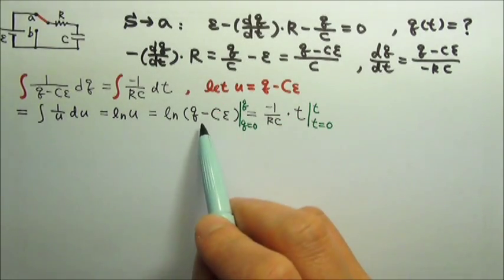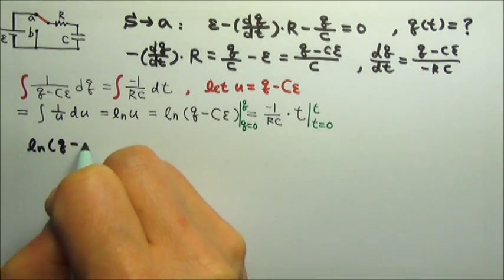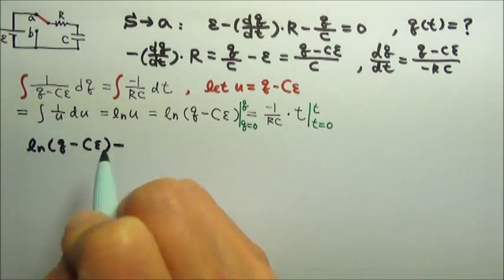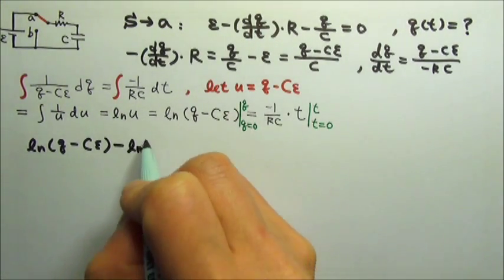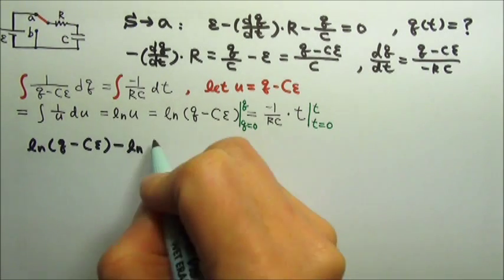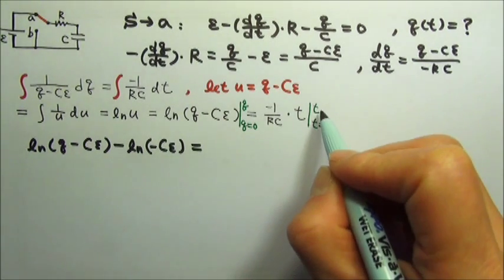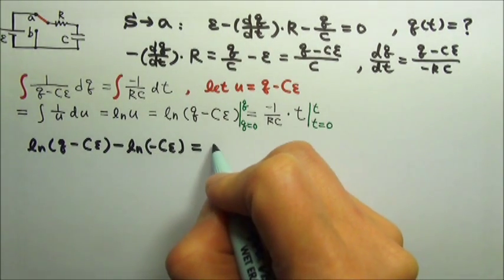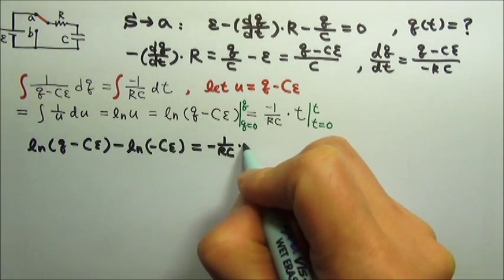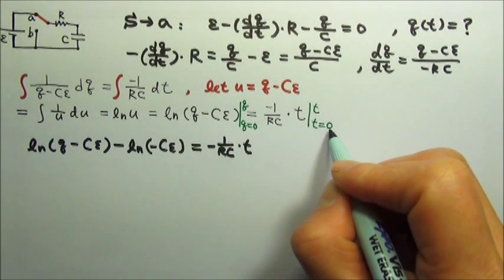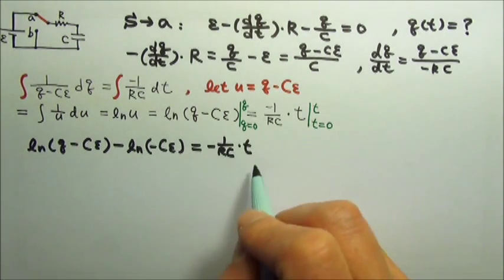So we will plug in the upper bound, which gives us natural log q minus Cε. Minus what we get when we plug in the lower bound, which gives me natural log, and that's 0 minus Cε, so just minus Cε. And then on the other side, we plug in the t, the upper bound, which gives me negative 1 over RC times t. And then minus what we get when we plug in the lower bound, which is 0. So this is it.